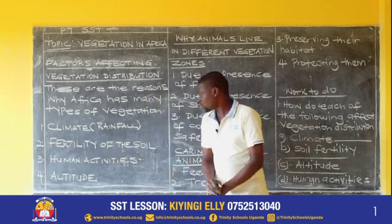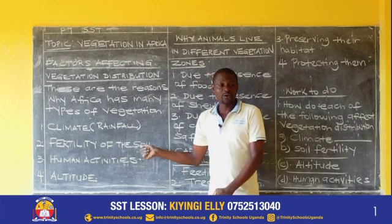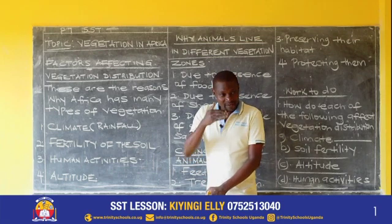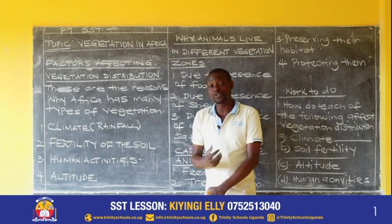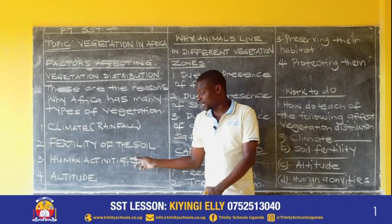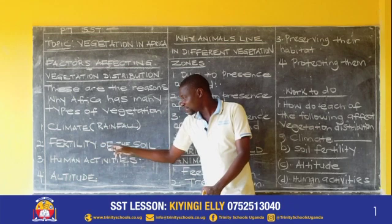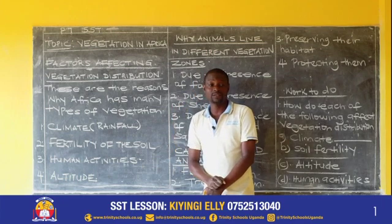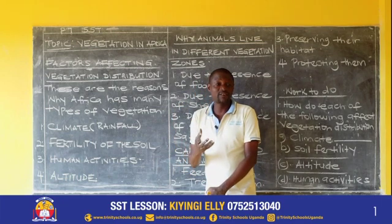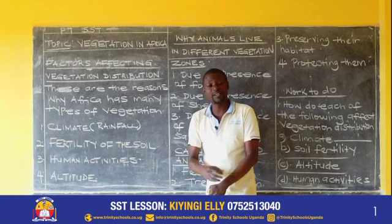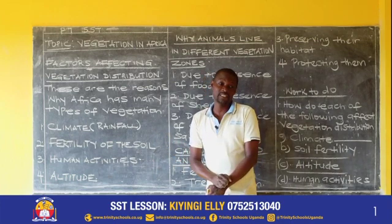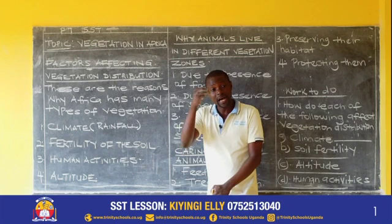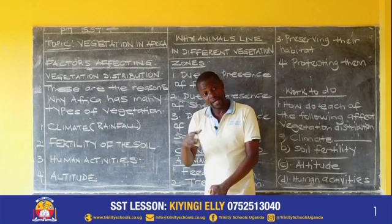When we go to fertility of the soil, vegetation can't grow without soil. The more fertile the soil is, the more vegetation we shall have in an area. Places with fertile soil have more vegetation than places with poor soil. In areas where the soil is fertile, you find a lot of vegetation. Where the soil is not fertile, you find little or no vegetation. So how does fertility of the soil affect vegetation? Places with fertile soils have more vegetation than places with poor soil.